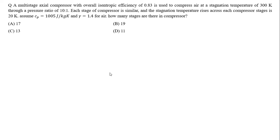A multistage axial compressor with overall efficiency of 0.83 is used to compress air at a stagnation temperature of 300 Kelvin through a pressure ratio of 10 to 1. Each stage of the compressor is similar and the stagnation temperature rise across each stage is 20 Kelvin. Assume CP = 1005 J/kg·K and gamma = 1.4 for air. How many stages are there in the compressor?